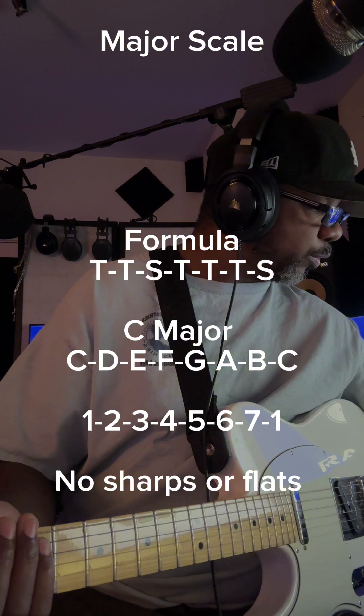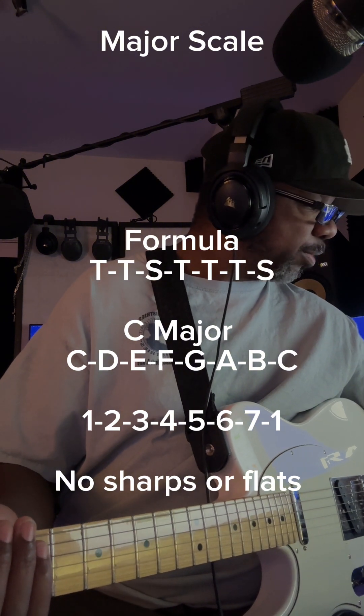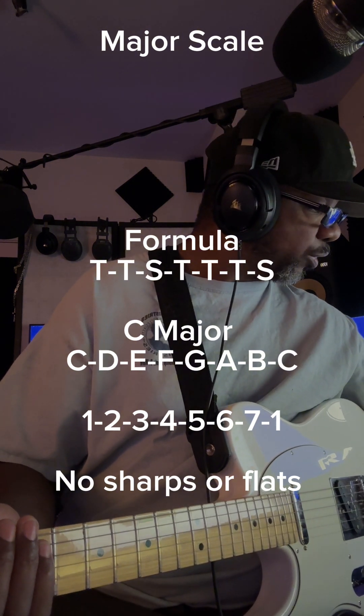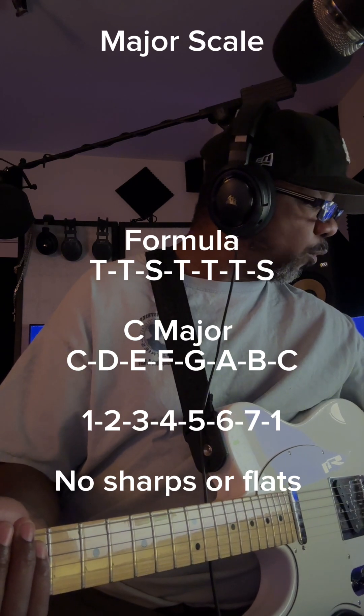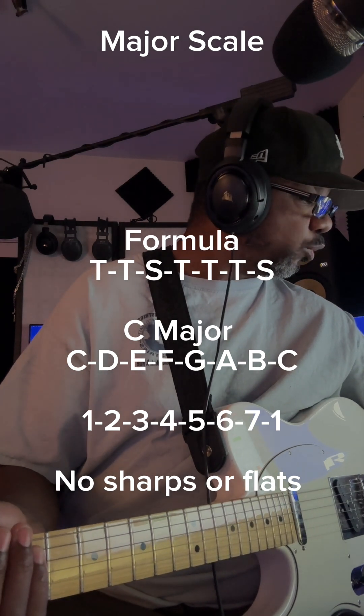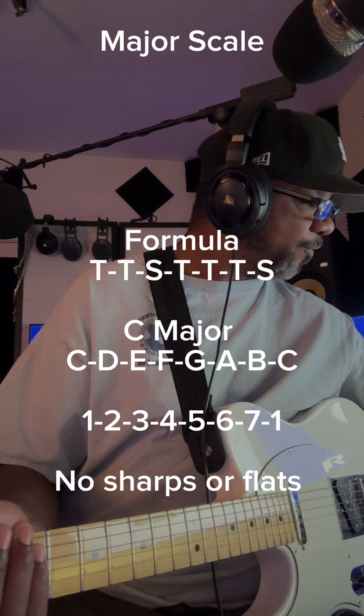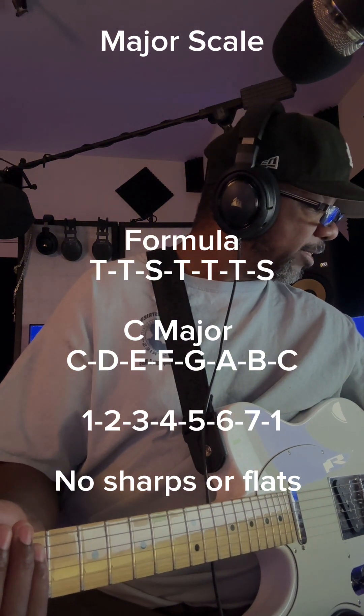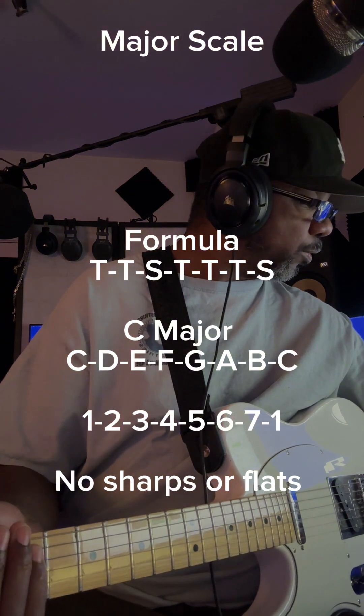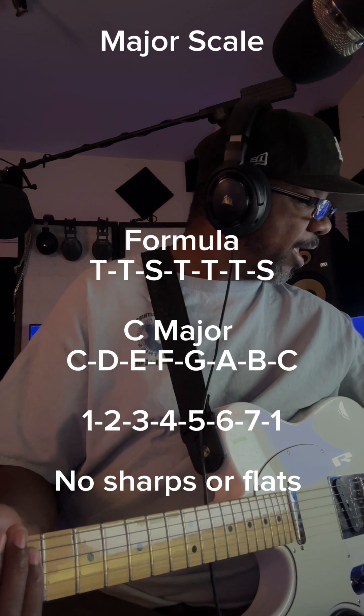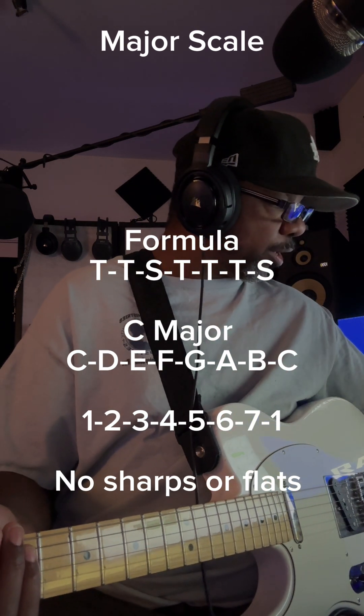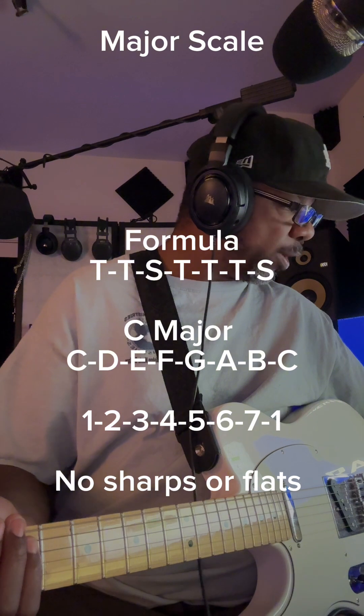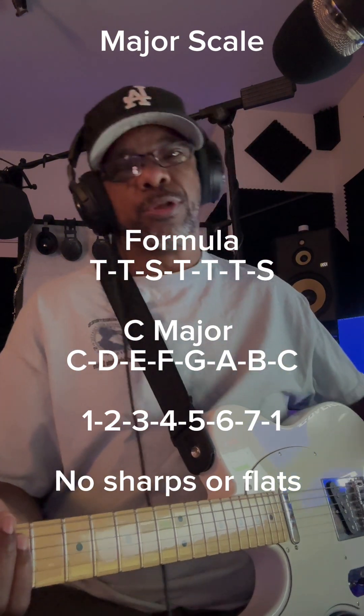Between the 1 and the 2, there's a tone. Between the 2 and the 3, there is a tone. Between the 3 and the 4, there is a semitone. Between the 4 and the 5, the 5 and the 6, and the 6 and the 7, there is a tone. And between the 7 and the last note or starting over to the 1 is a semitone.